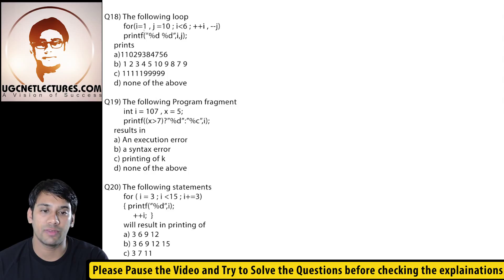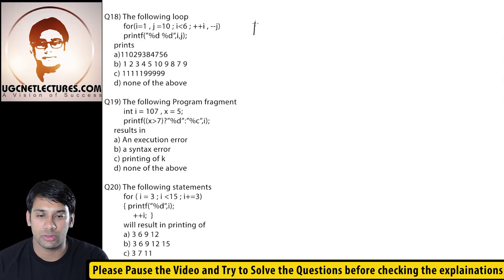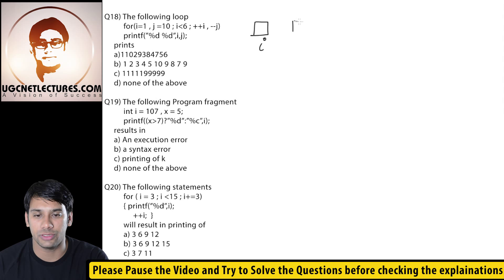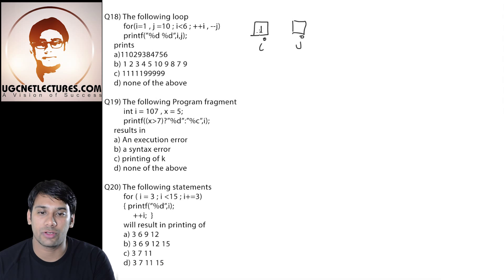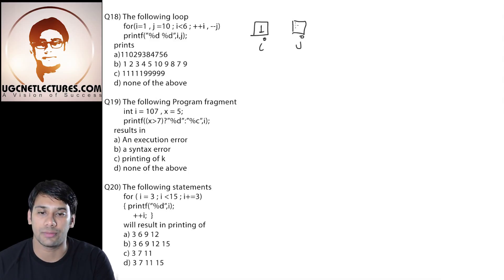In this for loop, we are having two variables: variable i and variable j. In the initialization part, the value stored in variable i is 1 and the value stored in variable j is 10.